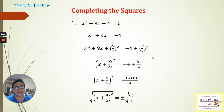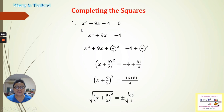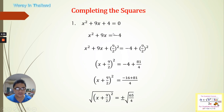Completing the square is also one way of finding the roots or the solution set for any quadratic equation. So we have here the first one: x² + 9x + 4 = 0. The first thing we're going to do is transpose this constant value to the right side. So from positive 4 it becomes negative 4, because we're going to make this left side into a perfect square.